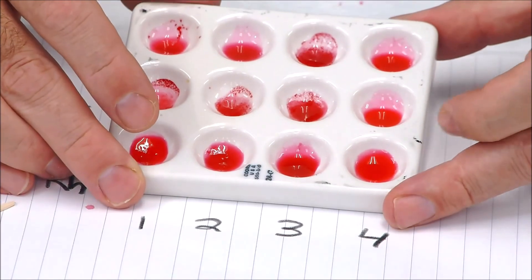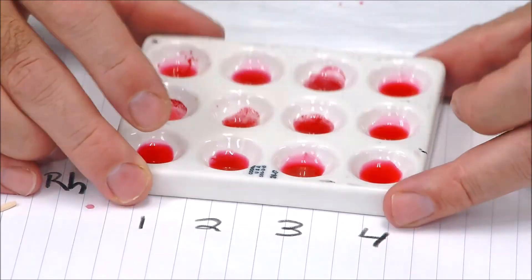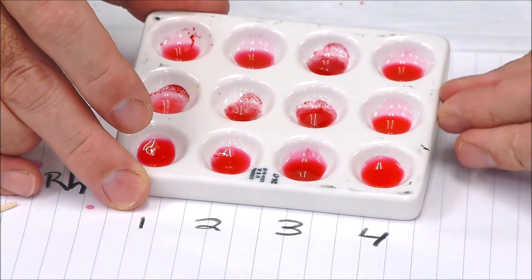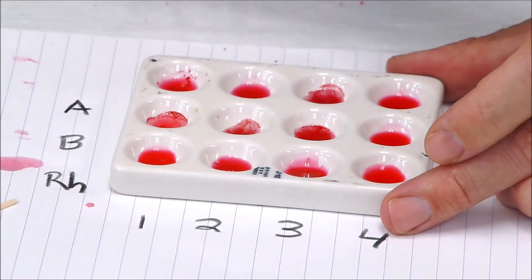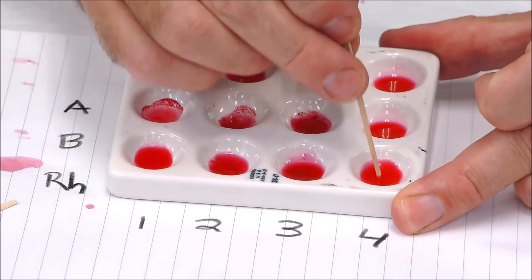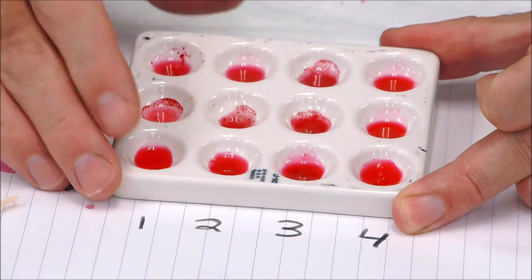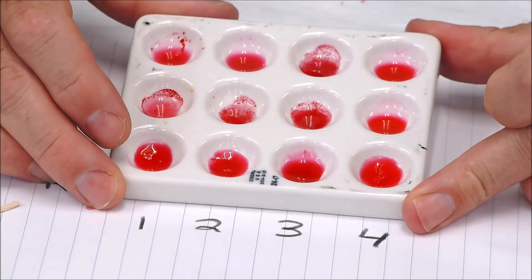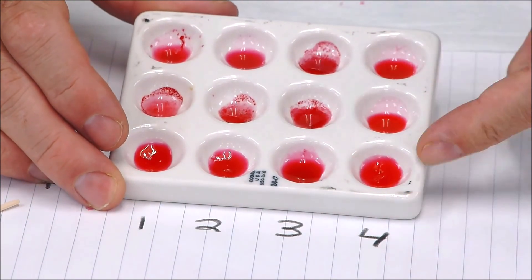And then sample four here—we have what looks like no clumping in any of the first two wells. And we'll go ahead and just see what the fourth well looks like. Again, real blood doesn't gel like that, but we'll just say that the Rh here, for sake of argument, is positive. So be able to figure out what that blood type is.